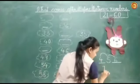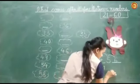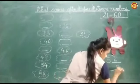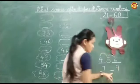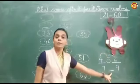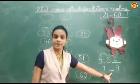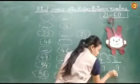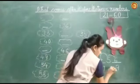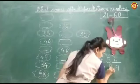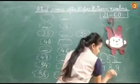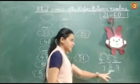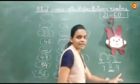Seven, dash, nine — toh yaha pe apko mid wala, between wala number hai. After seven comes eight, so seven, eight, nine.